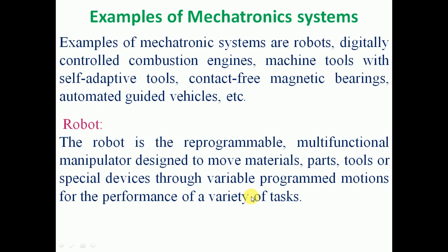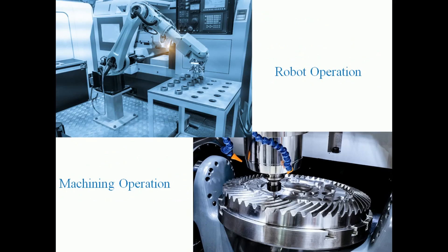Nowadays robots are used for machining, defense applications, medical applications, and various processes. All outputs are compared with the input and corrective actions are taken by the signals. Therefore the robot is a mechatronic system. We can see that some machining operation is carried out by the robot. Inputs such as inner diameter, outside diameter, and surface finish are given. Whatever output the robot produces, that is sent back as a signal to the system, where comparison takes place and corrective action is applied if required. The robot is a closed-loop control system.